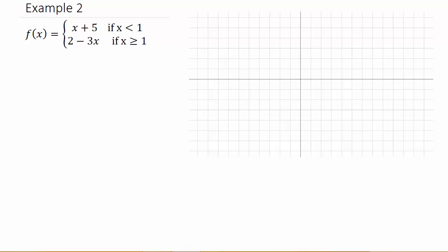So here we have f of x equals x plus 5 if x is less than 1, and we have f of x equals 2 minus 3x if x is greater than or equal to 1. So it's pretty easy to graph these things. Basically, what you're doing is graphing f of x equals x plus 5 and f of x equals 2 minus 3x on the same coordinate system. That's all you're doing.